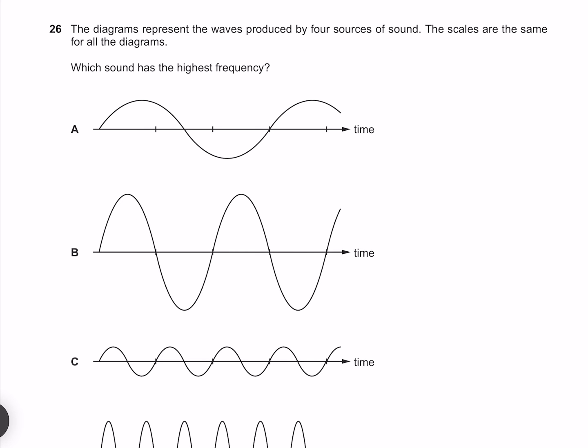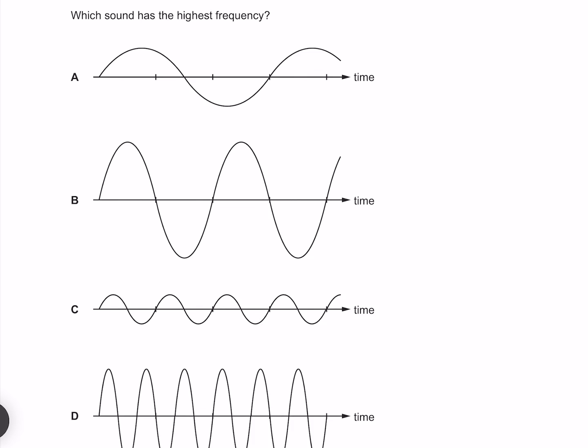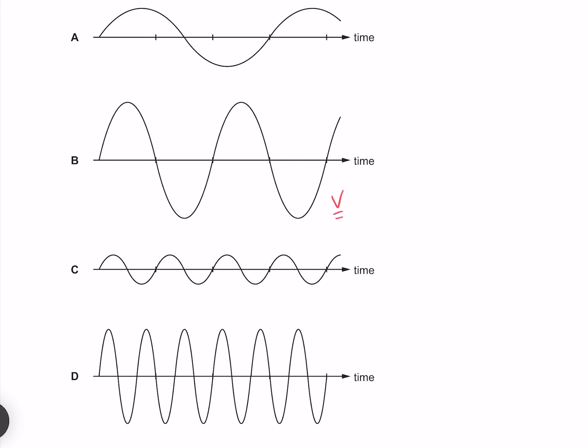The diagrams represent the waves produced by four sources of sound. The scales are the same for all the diagrams. Which sound has the highest frequency? If we assume that our wave speed is constant, then our highest frequency must have the lowest wavelength. Our lowest or shortest wavelength is depicted in D.